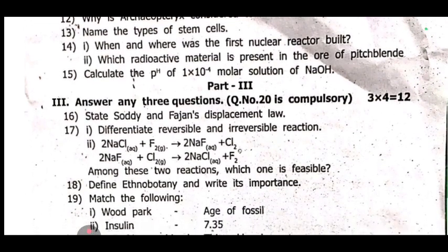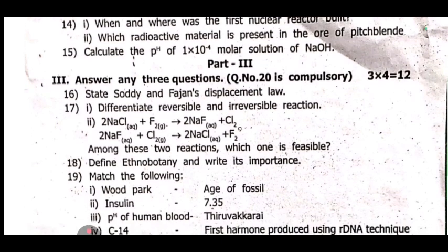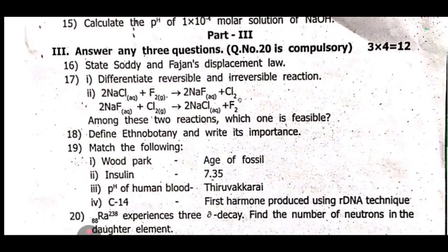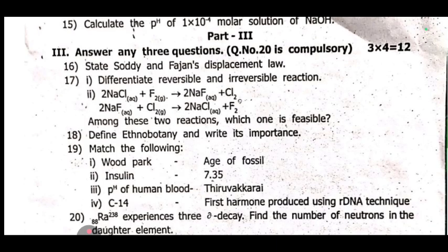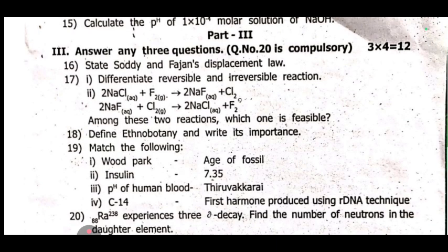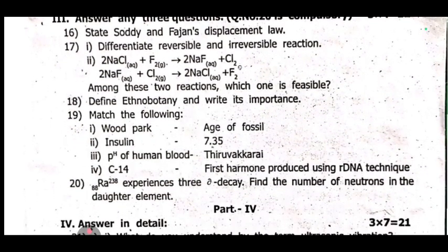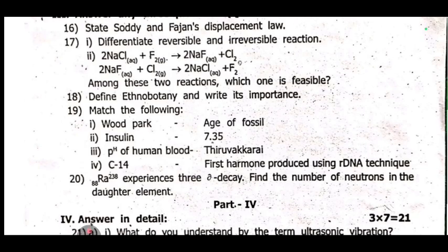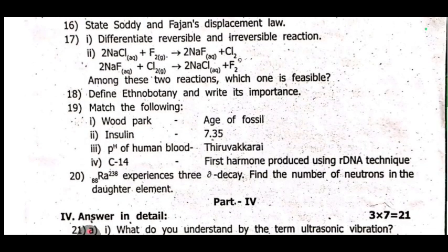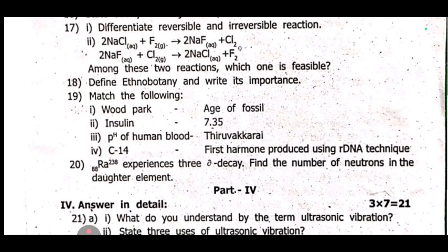Eighteenth one: define ethnobotany and write its importance. Nineteenth one: match the following — insulin, pH of human blood is C14, age of fossil, first hormone produced using recombinant DNA technique. Twenty-first part: Ra-88 undergoes 3 alpha decays — find the number of neutrons in the resulting element.